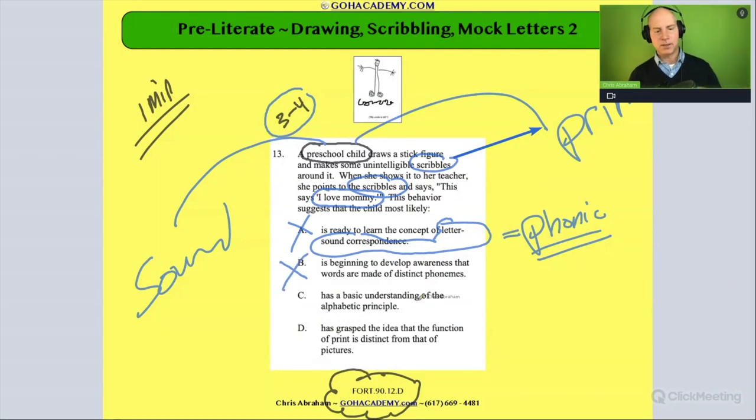How about this? Has a basic understanding of the alphabetical principle. No, we just spent some time on that one. No, the child is not yet matching up sounds with their corresponding letters or letters with their corresponding sounds. They're not doing that relationship, that predictable relationship between letters and their most common sounds. So we can cross that one off. We're left with this last one here.